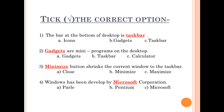Number 2: Dash are mini programs on the desktop. Answers are gadgets, taskbar, calculator — and the correct answer is gadgets. Gadgets are mini programs on the desktop. Number 3: Dash button shrinks the current window to the taskbar. Answers are close, minimize, or maximize — and the correct answer is minimize.